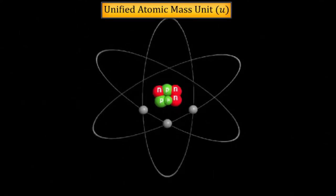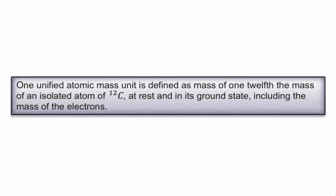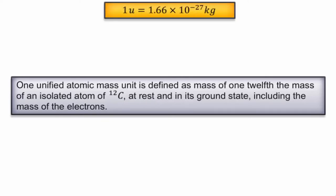One unified atomic mass unit is defined as mass of one-twelfth the mass of an isolated atom of carbon-12 isotope, at rest and in its ground state, including the mass of the electrons. It is equivalent to 1.66 × 10^-27 kilograms.